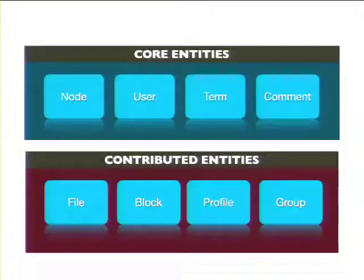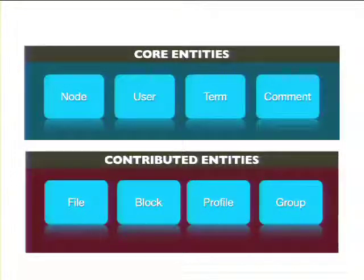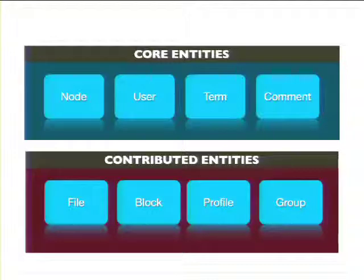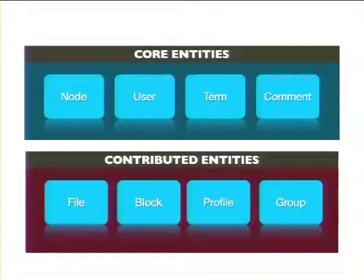We ended up with some entities in Core: node, user, term, and comment — all things that existed before but are now entities, meaning they are fieldable. Some other kinds of entities didn't make it into Core: file as an entity didn't make it, but there's a module for that. Blocks as entities didn't make it into Core, but there are contrib modules. Profiles as entities didn't make it, but there's contrib. And organic groups is another example of a contributed entity.